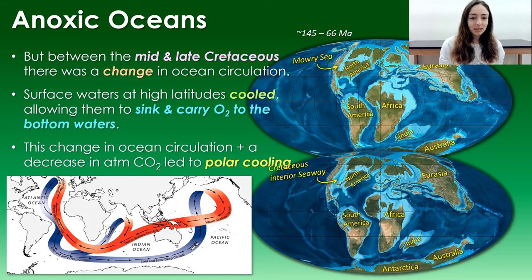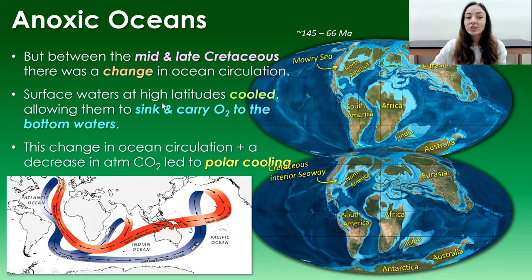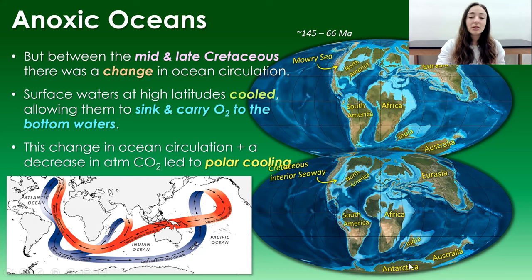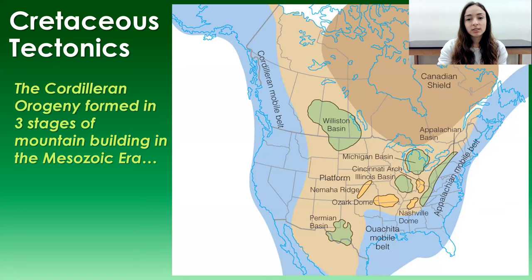Moving on — what helped the Cretaceous oceans become oxygenated again? Between the mid and late Cretaceous, a major change in ocean circulation is recorded by oxygen isotopes. Surface waters at high latitudes cooled enough to sink and carry oxygen to the bottom waters. A decrease in carbon dioxide led to polar cooling, strengthening the equator-to-pole temperature gradient, which drove stronger winds, stronger upwelling, and overall stronger ocean mixing.